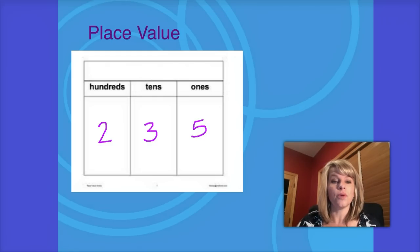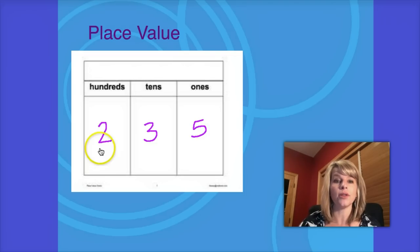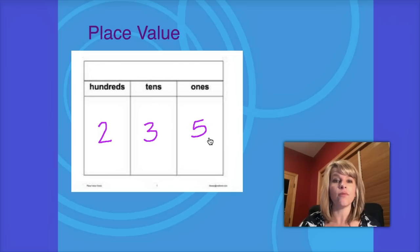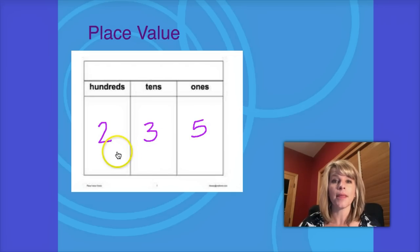Just to review, numbers have what's called place value. Each part of a number has a value. In the number 235, the 5 has a value of 5 ones, the 3 has a value of 3 tens or 30, and the digit 2 has a value of 2 hundreds or 200.